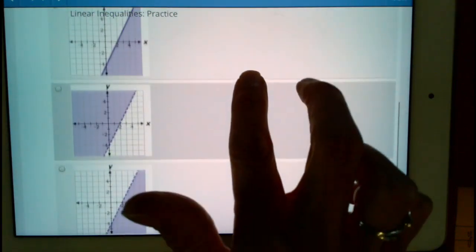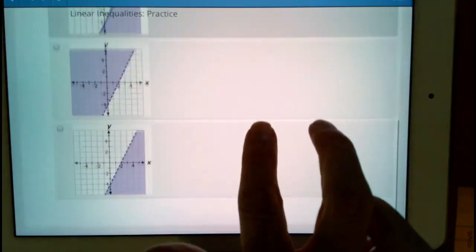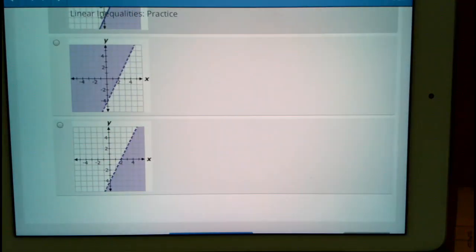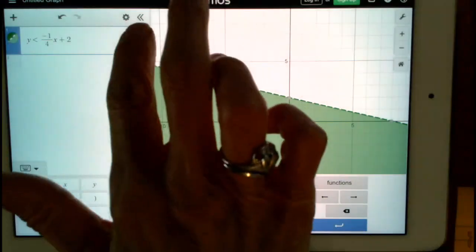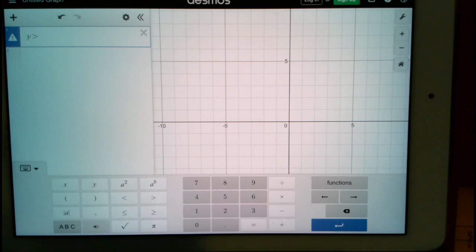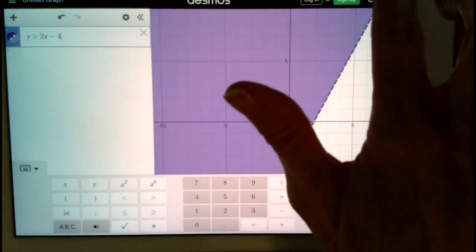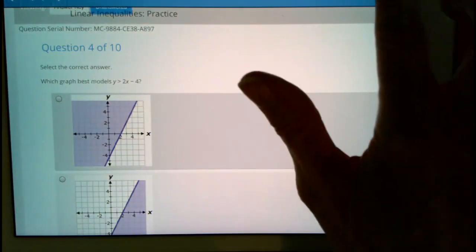And really, what's probably the easiest, but we're going to narrow it down to the last two because those both have dotted lines, dashed lines. y is greater than 2x minus 4, I believe that's the correct problem, yes.